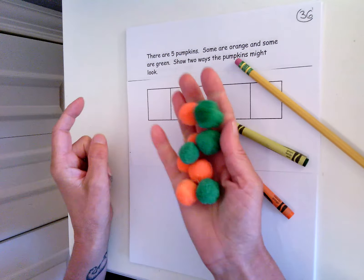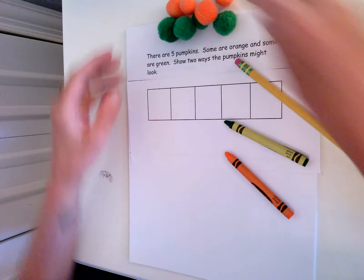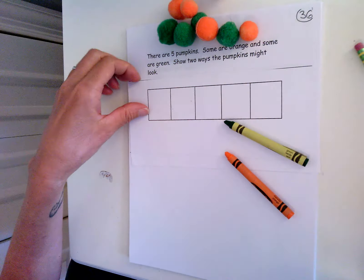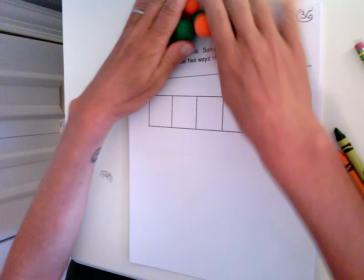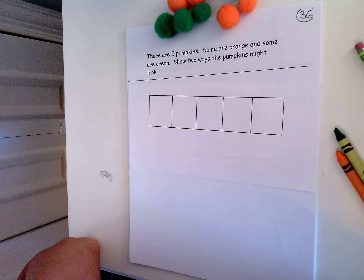I'm going to use green and orange counters, but any counters will work. Two-sided counters would also work. So what we're going to do is we're going to work on ways to make five or ways to break five apart.